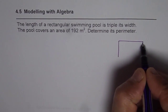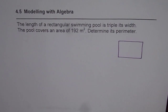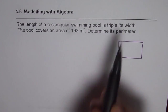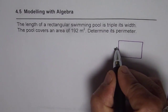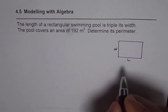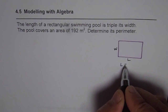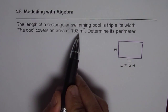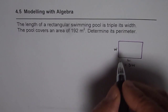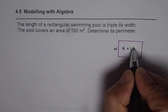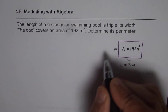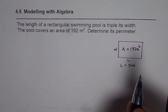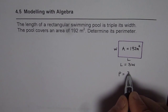So we have a rectangular swimming pool — let's say this is the rectangular swimming pool. We are given that the length is triple its width. Let W be the width and L be the length. In that case we know the relation that length equals 3 times width. The pool covers an area of 192 square meters, and we need to find the perimeter.